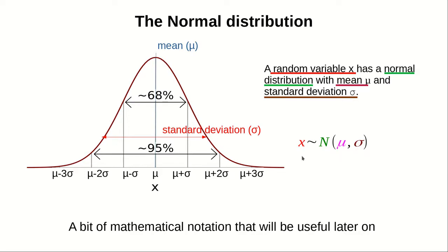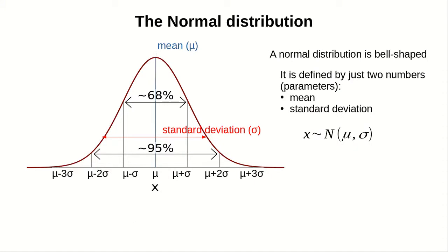A normal distribution is defined by only two numbers, what we call two parameters: the mean and the standard deviation. Only with these two numbers, you define the whole distribution.